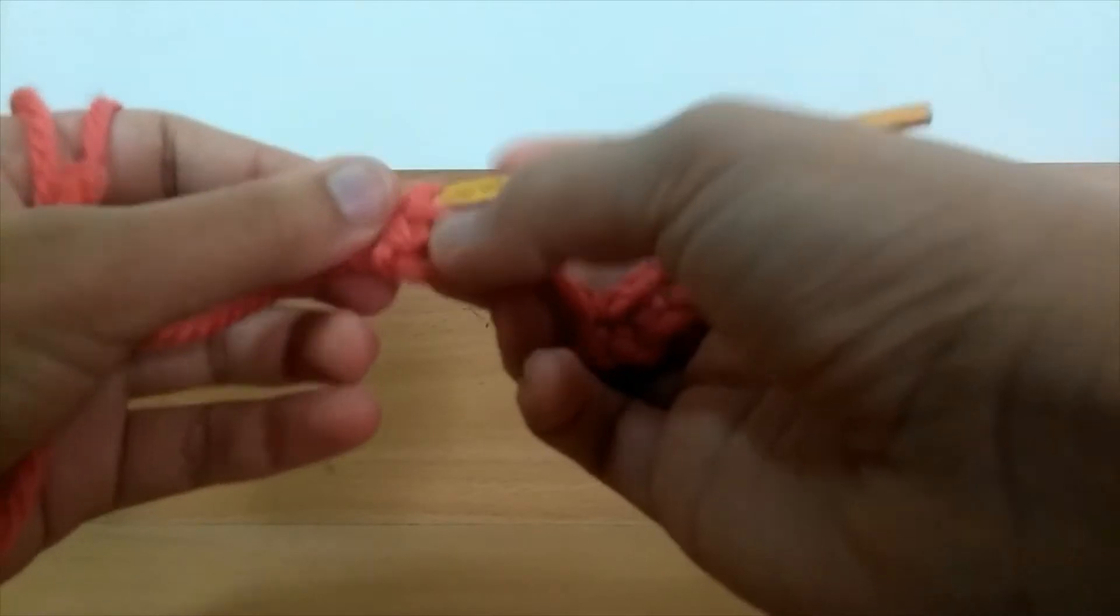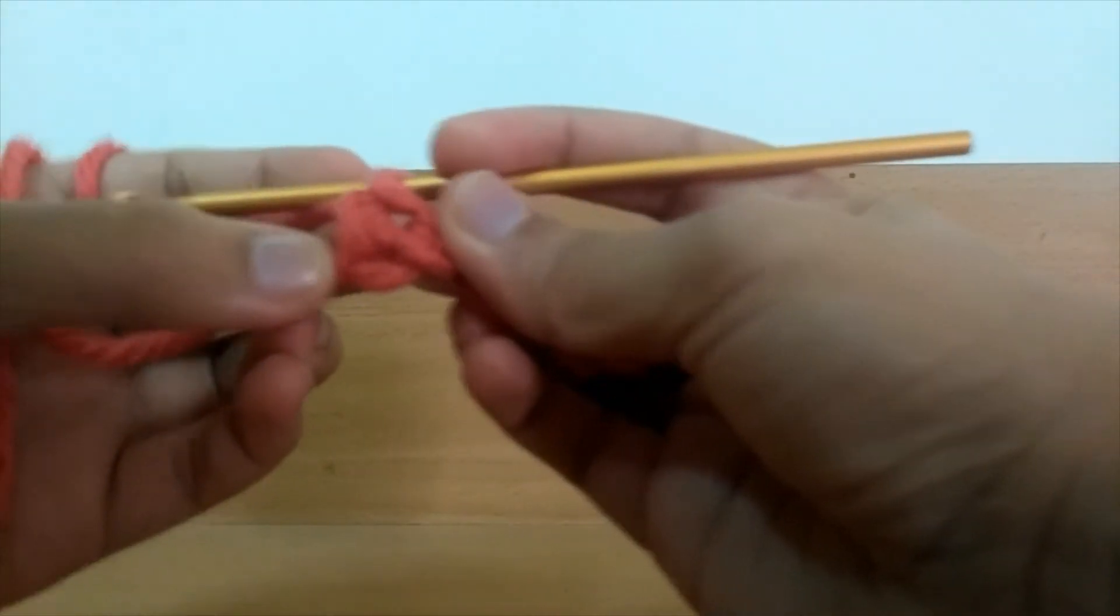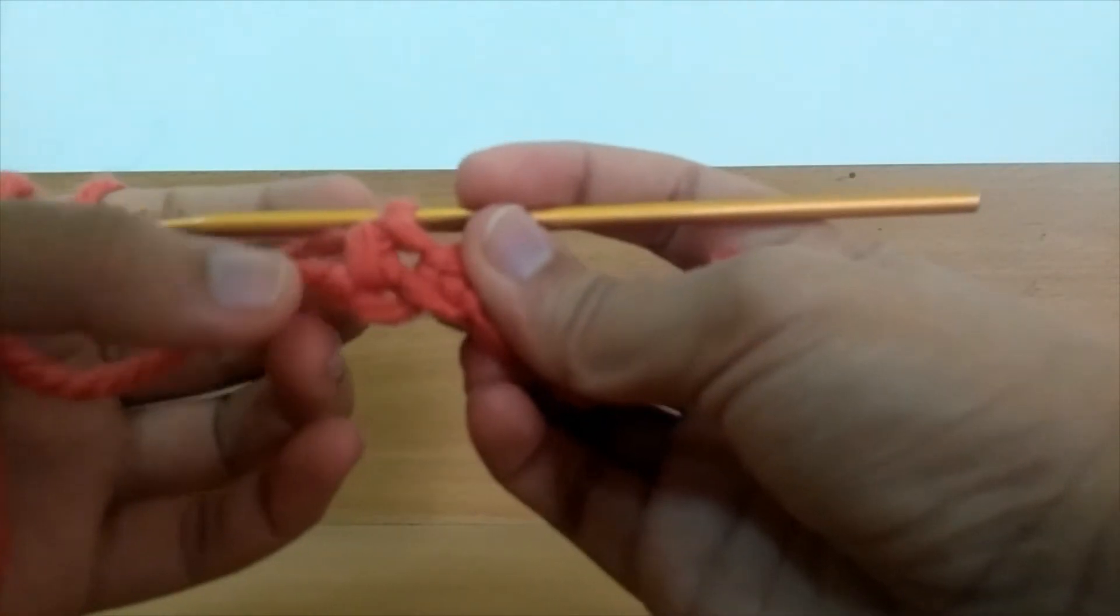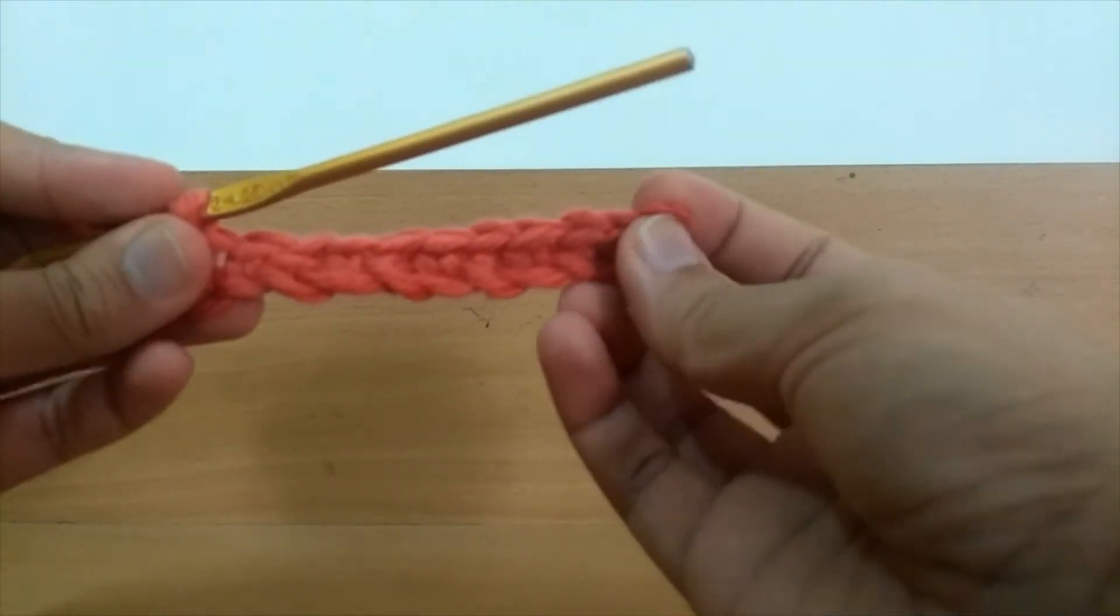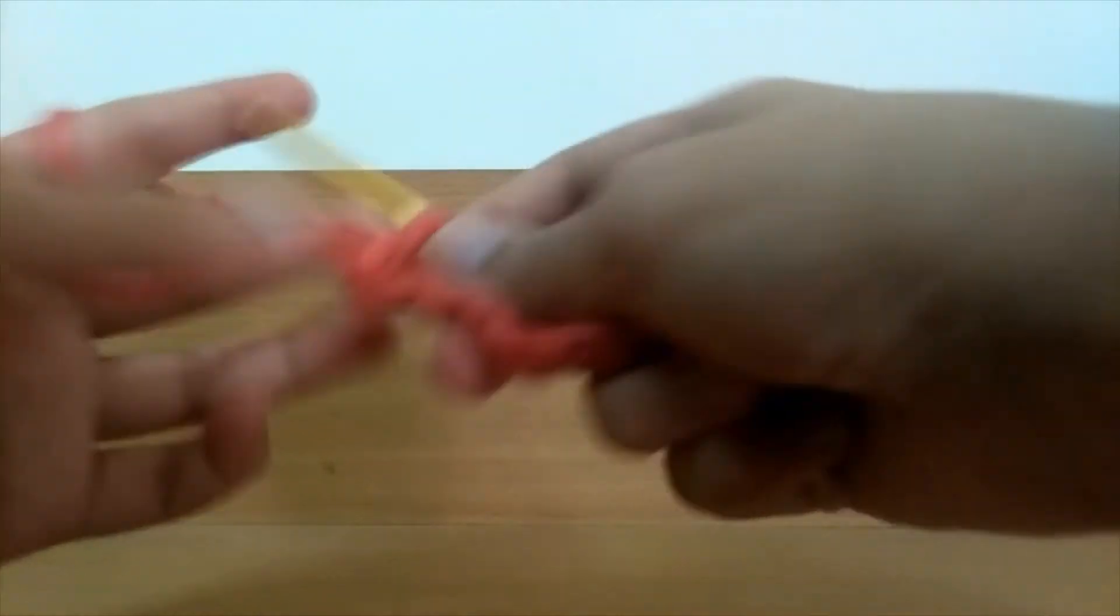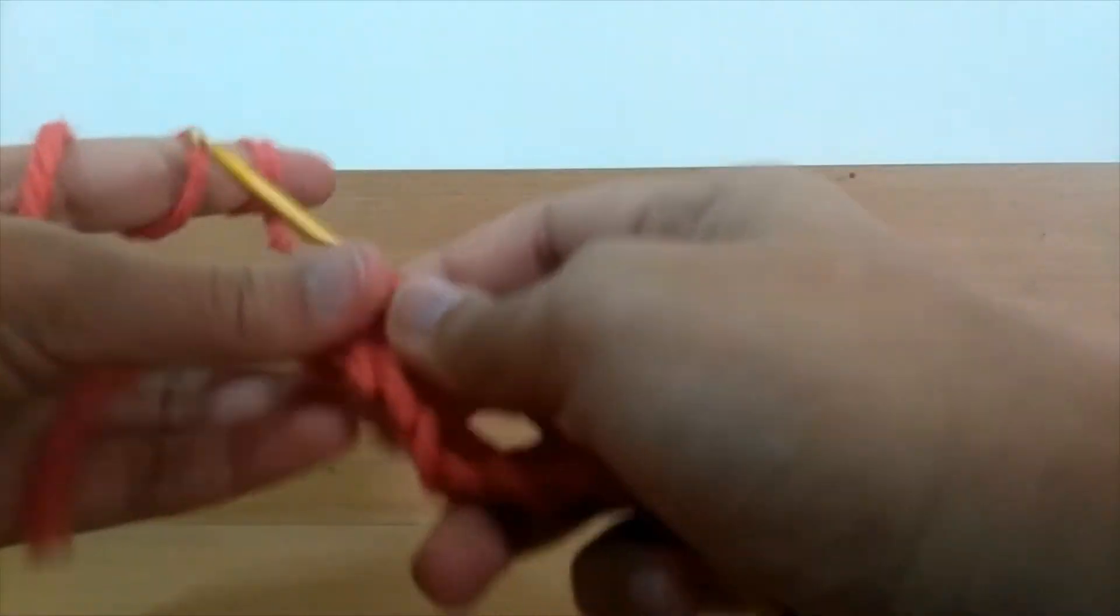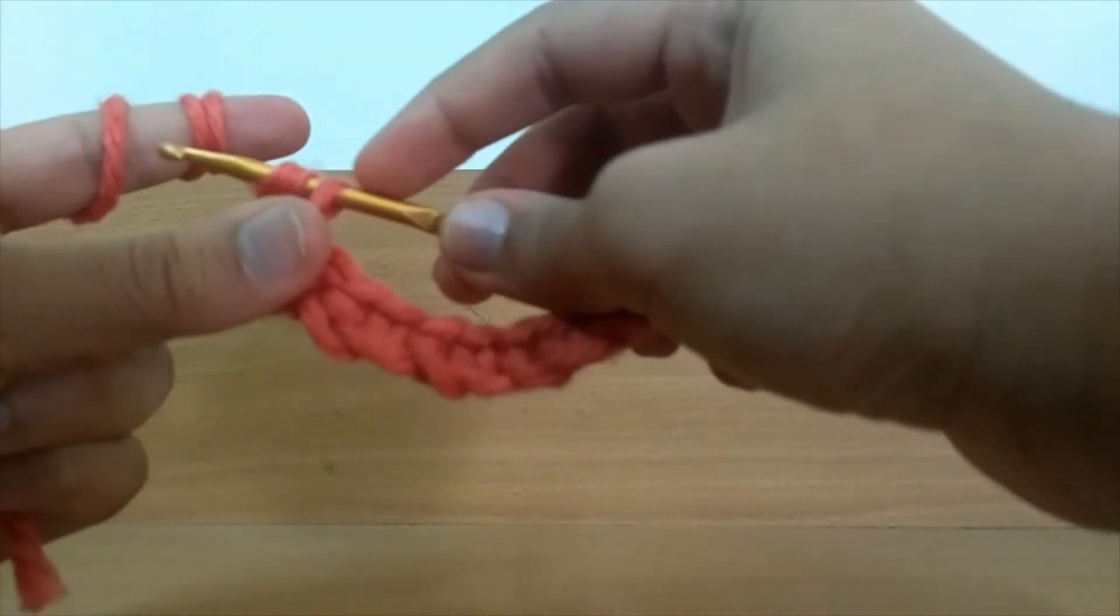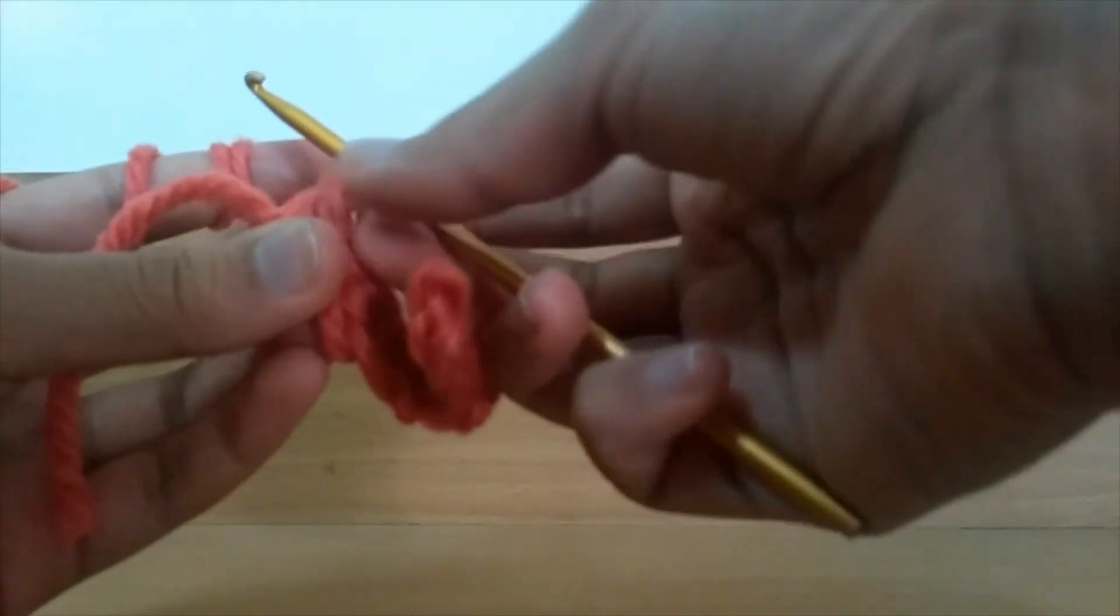This is so that you get a nice border on either side of your square. Now that you're at the end of the row, chain one and turn the work around.